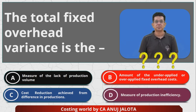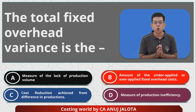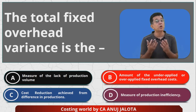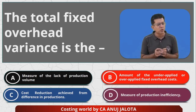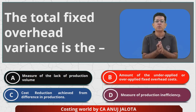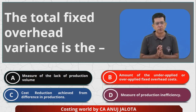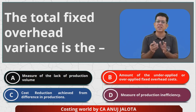The question talks of total fixed overhead cost variance. I think they are talking of absorption costing, because if it was marginal costing they would only be talking of expenditure variance. Option A is 'measure of lack of production volume' — I think they are referring to the fixed overheads volume variance. That is computed as: how much output should have been produced minus how much output was produced, into the absorption rate. So A cannot be the answer.